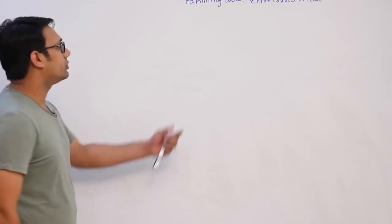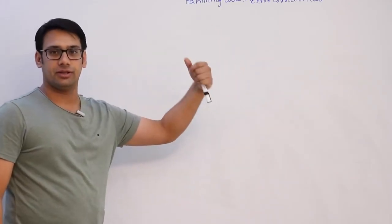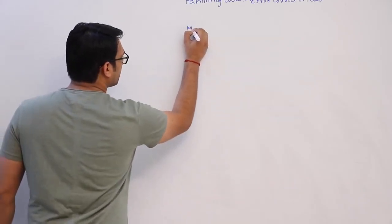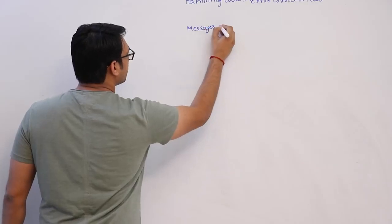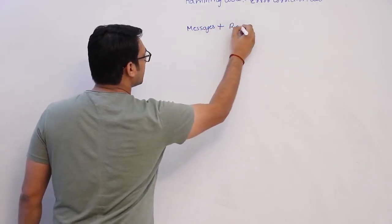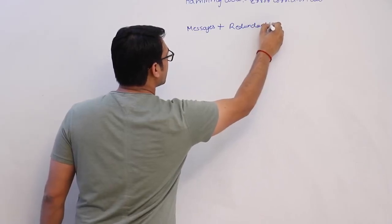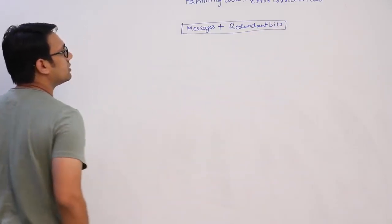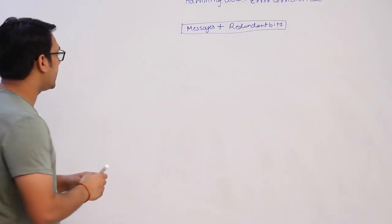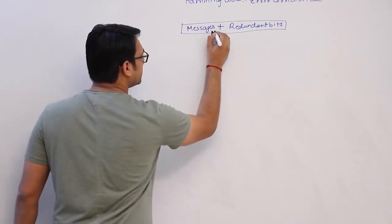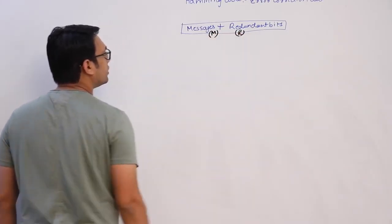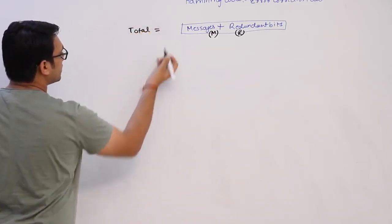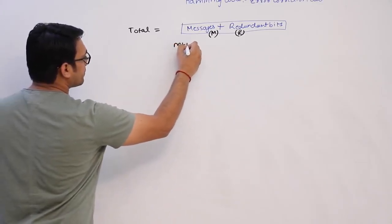When we use error detection and correction methods, we have to include some extra bits in the messages. We are going to have some bits for the messages plus some extra redundant bits to find out whether there are errors or to correct them. Assuming there are m bits for messages and r bits for redundant bits, the total number of bits the sender will send is m plus r.